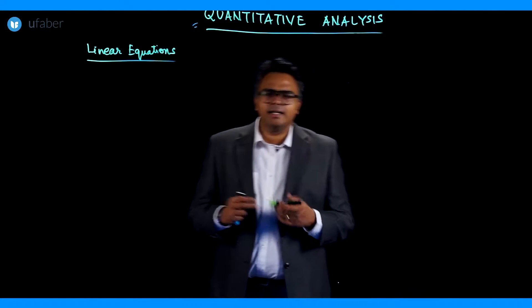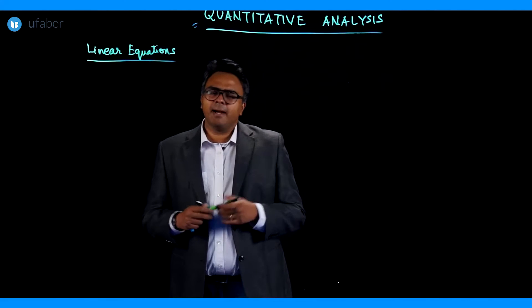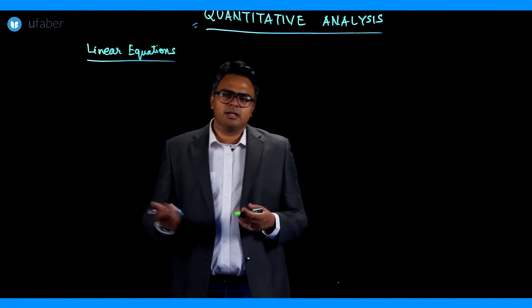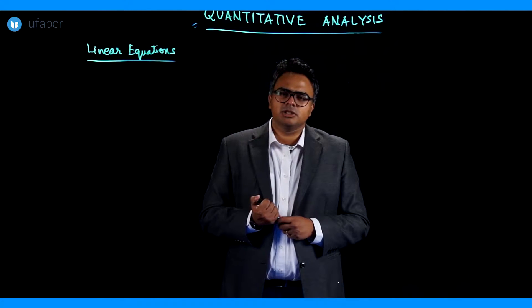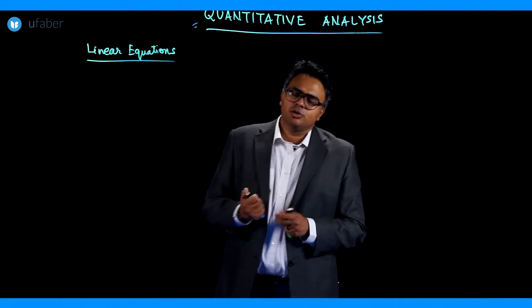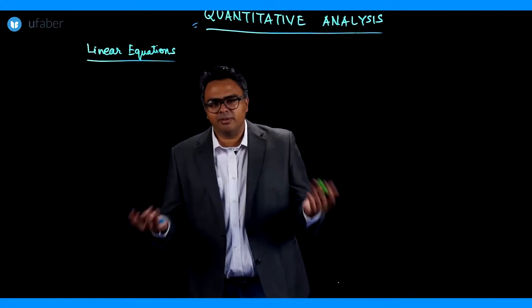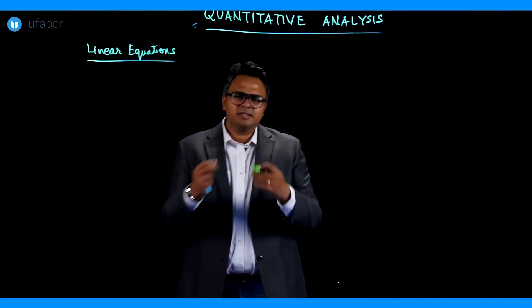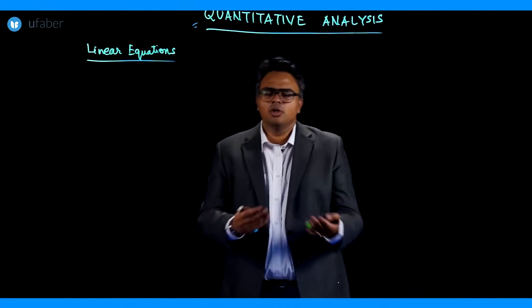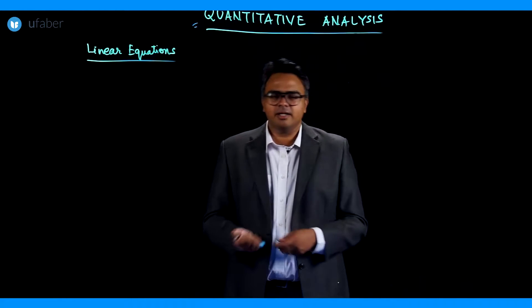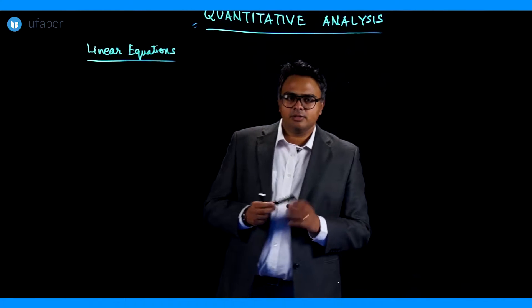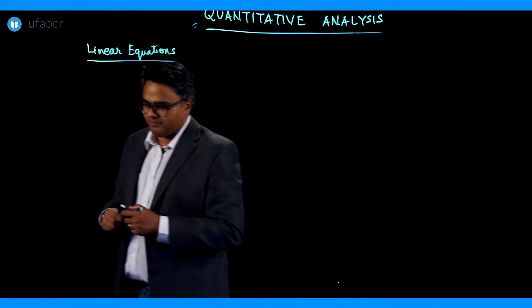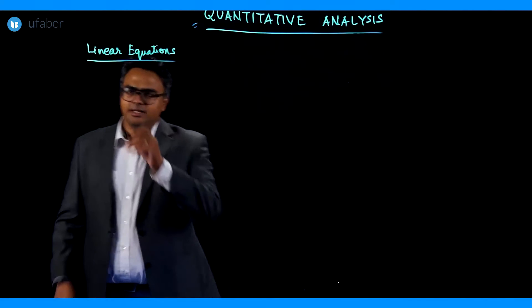Say for example, I tell you that my age currently is 30 years. So 10 years later what will be my age? The simplest of problem, you can all automatically tell it's 40. But let's say how do we write it as an equation? Just giving you a simple demonstration. My age currently is 30 years.